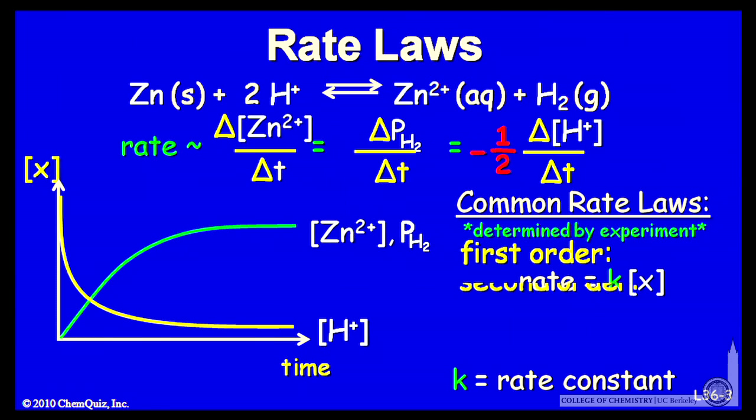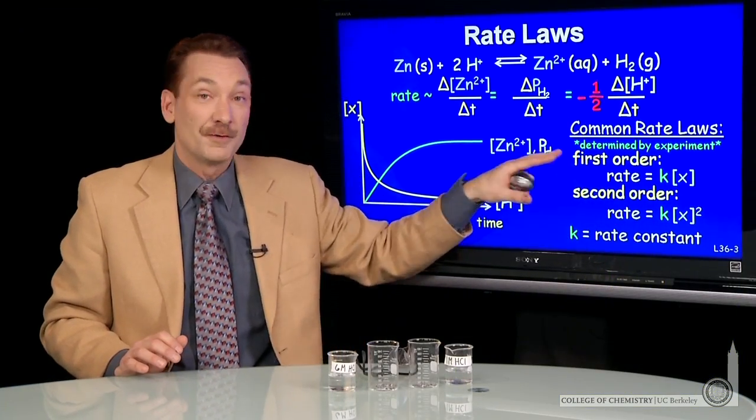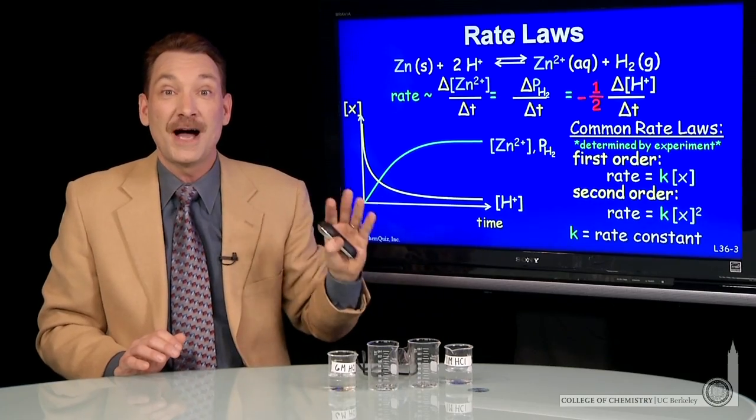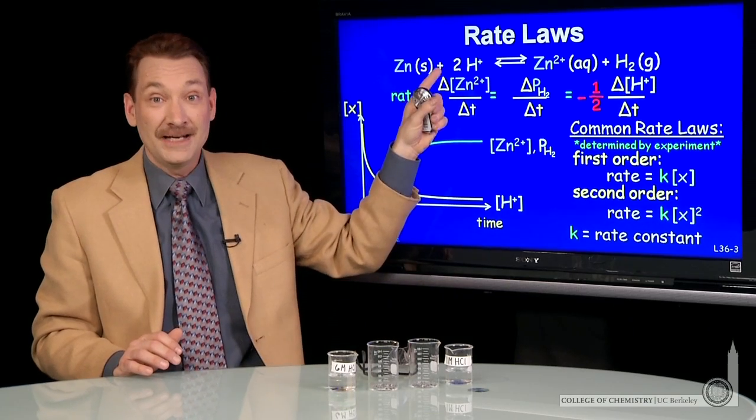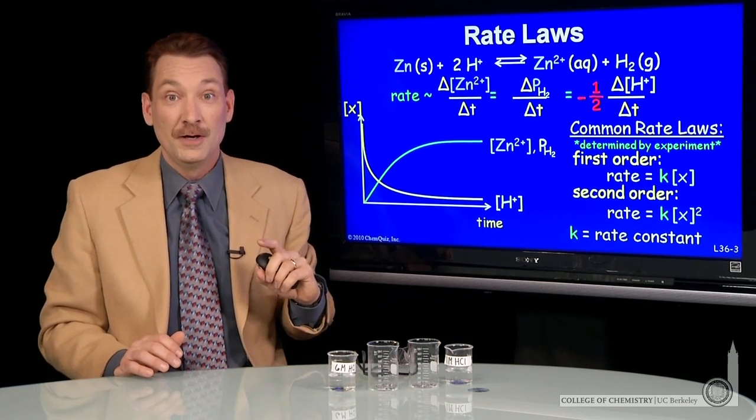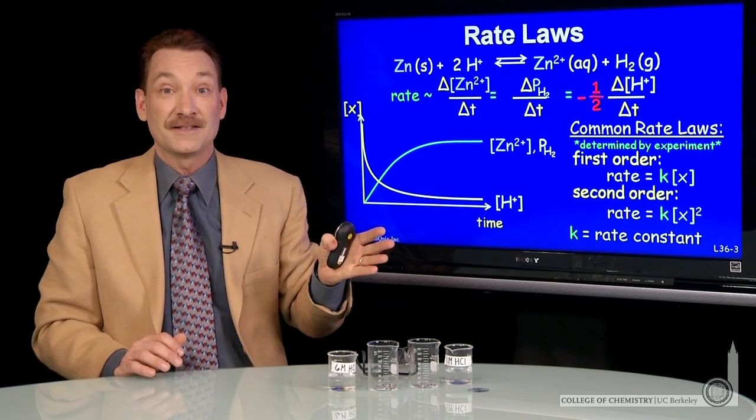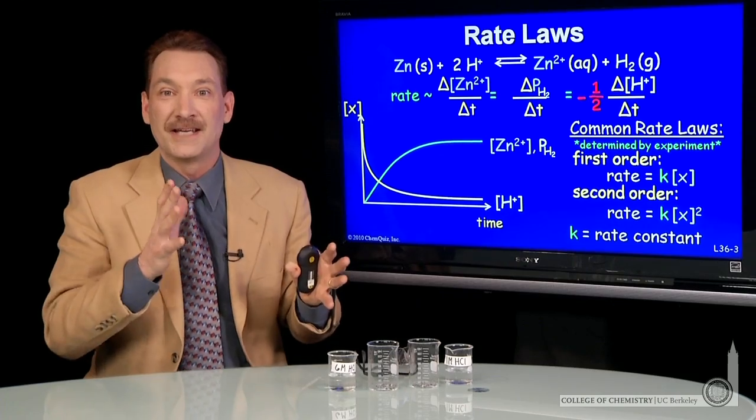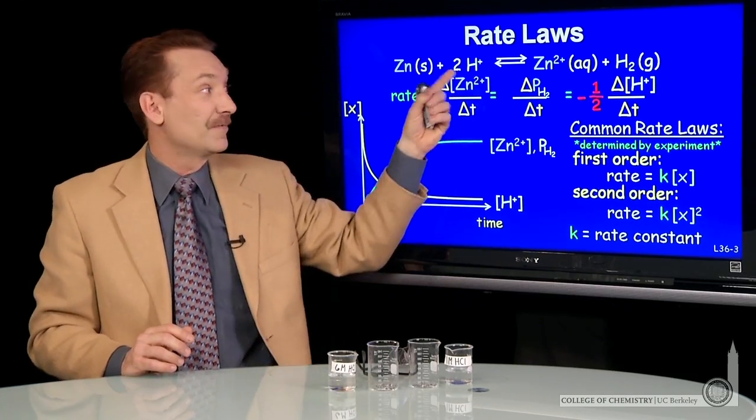Now there's another way that rates often proceed. Rates are often proportional to the concentration squared. And here I should make an important distinction. This rate law, both of these, whether the rate laws are first order or second order, they're determined by experiment. That is, this power of 2 here and this power of 1 here are not related necessarily to the stoichiometric coefficients. The rate laws must be determined by experiment. And I make that distinction because in thermodynamics, we have the equilibrium constant K, where we do use the powers of the balanced stoichiometric coefficients.